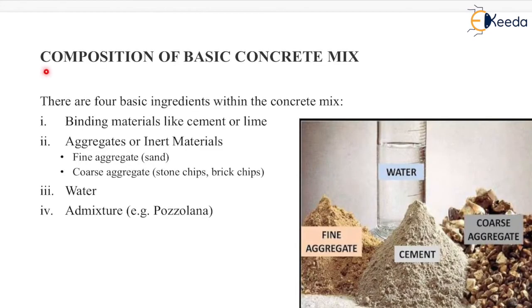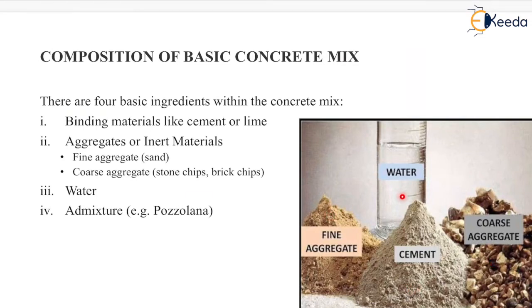The next topic is the composition of the basic concrete mix. There are four basic ingredients: first, a binding material like cement or lime; second, aggregates or inert materials — fine aggregate (sand) and coarse aggregate (stone chips, brick chips, etc.); third, water; and fourth, admixtures such as pozzolana or other admixtures.